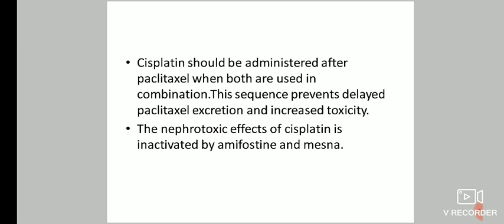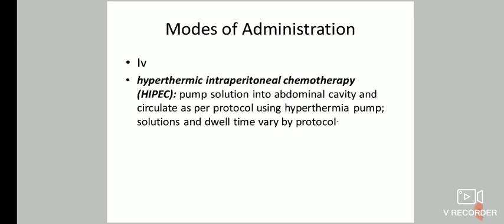The nephrotoxic effect of cisplatin is reduced by amifostine and mesna. There are two modes of administration of cisplatin: intravenous, and HIPEC — hyperthermic intraperitoneal chemotherapy — where solution is pumped into the abdominal cavity and circulated using a hyperthermia pump, with dwell time varying by protocol.